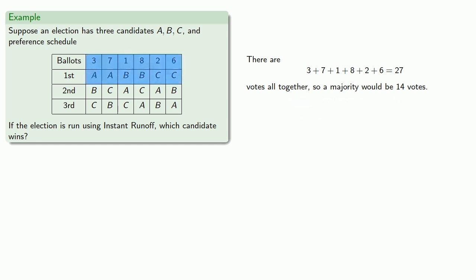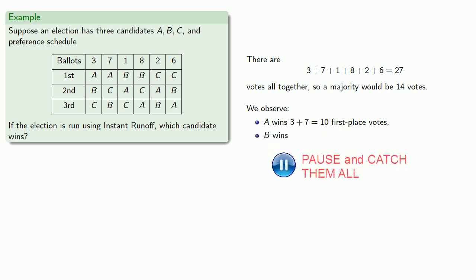We'll look at the first place votes only, and we see that A wins three plus seven, ten first place votes, B wins nine first place votes, and C wins eight first place votes. And so, no candidate has a majority.